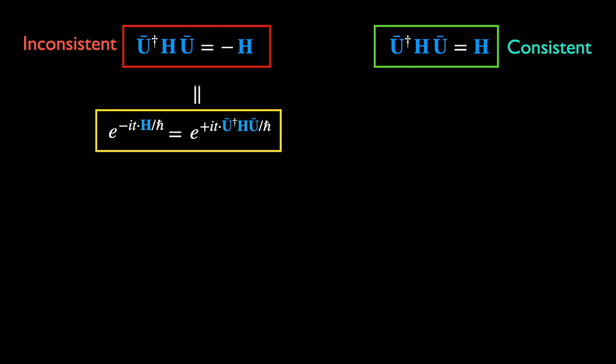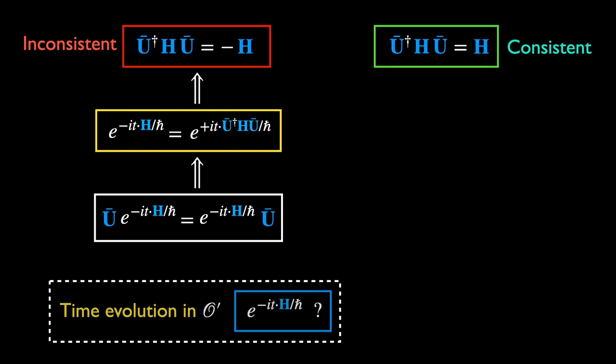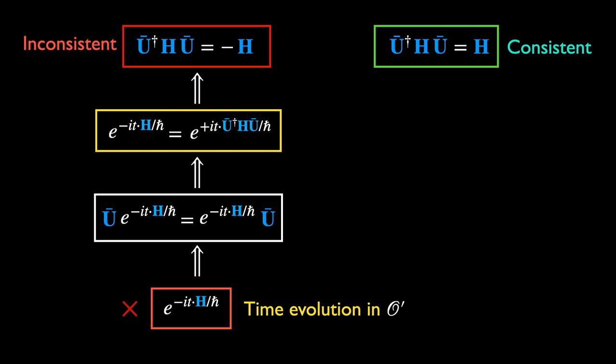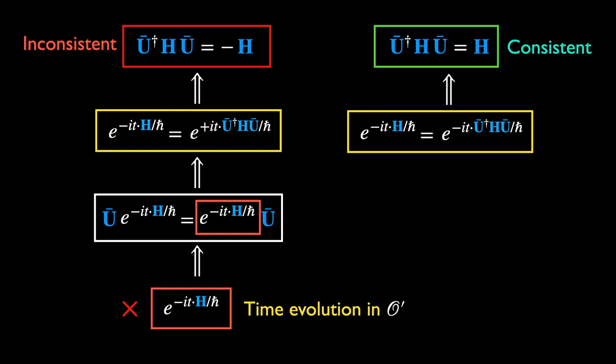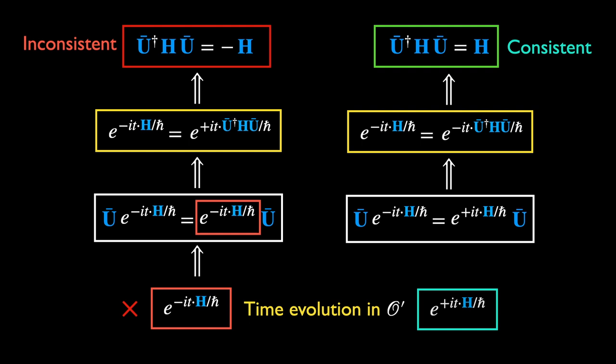Tracing the source of the inconsistency leads us back to the assumption of the time evolution rule in the frame of O-prime. We had assumed that it would be the same for O-prime as for O — the time evolution operator in the blue box. However, this leads to the contradiction. Working with the consistent equation instead, it seems that all it takes to make things right is to change the sign in the time evolution operator for O-prime.